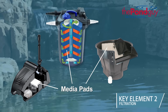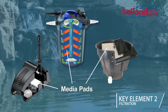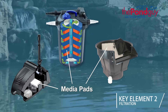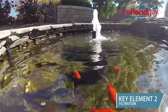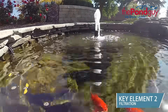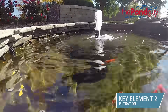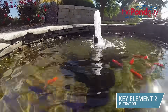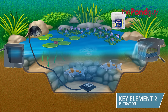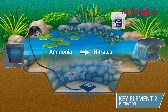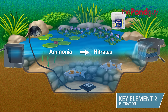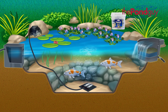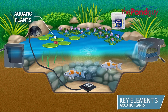Nitrifying bacteria feed on toxic ammonia and nitrites and convert them into nitrates. This is why it is important to size your filter system correctly to handle the amount of waste being introduced to the pond by fish and the surrounding environment. With your filtration system breaking down ammonia into nitrates — the main nutrient source for algae — the next step to a balanced pond is to limit the amount of nitrates. A great way to do this is with the third key element: aquatic plants.